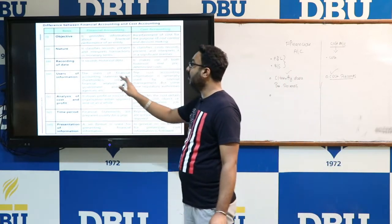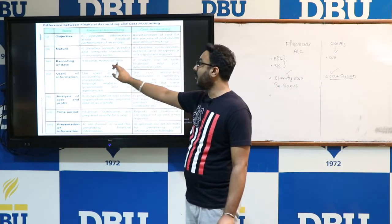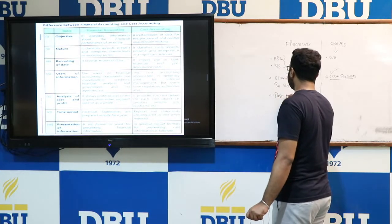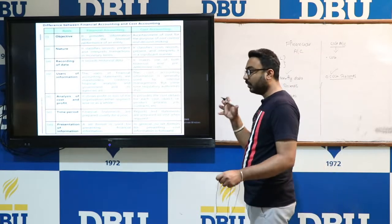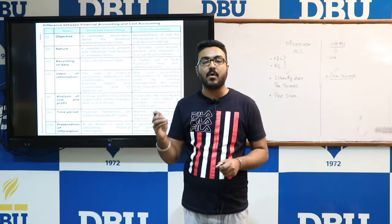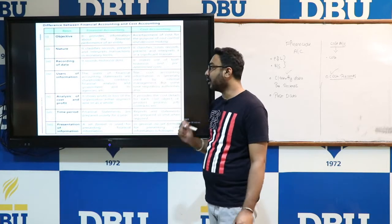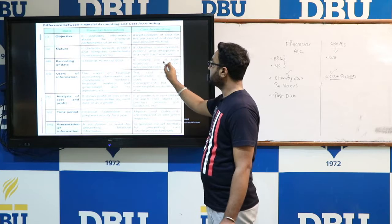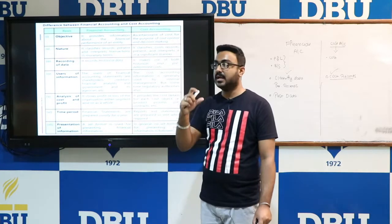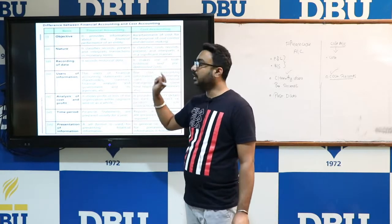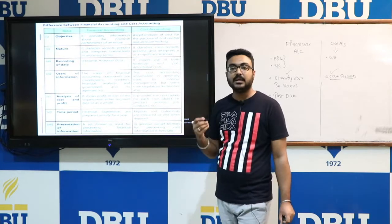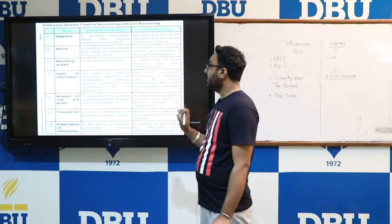The next difference is recording of data. Financial accounting records only historical data — that is, past data. All transactions that have already occurred are required to be recorded in the books of accounts. Cost accounting, however, makes use of both historical as well as predetermined cost.